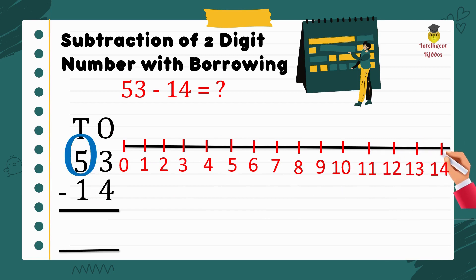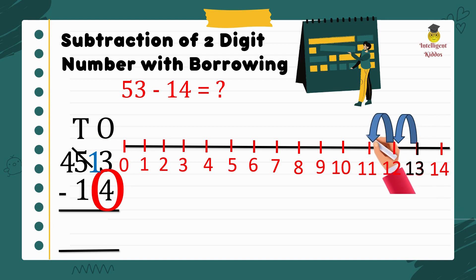Take a borrow from tens position. Cut 5, it will become 4, and it gives 10 to ones position and it will become 13. Mark 13 on a number line, subtract 4, 1, 2, 3, 4. 13 minus 4 is 9.